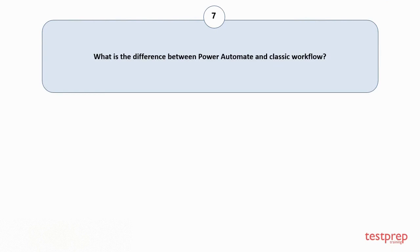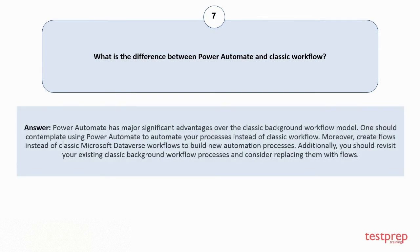Question number 7: What is the difference between Power Automate and classic workflow? Power Automate has major significant advantages over the classic background workflow model. One should contemplate using Power Automate to automate your processes instead of classic workflow. Moreover, create flows instead of classic Microsoft Dataverse workflows to build new automation processes. Additionally, you should revisit your existing classic background workflow processes and consider replacing them with flows.